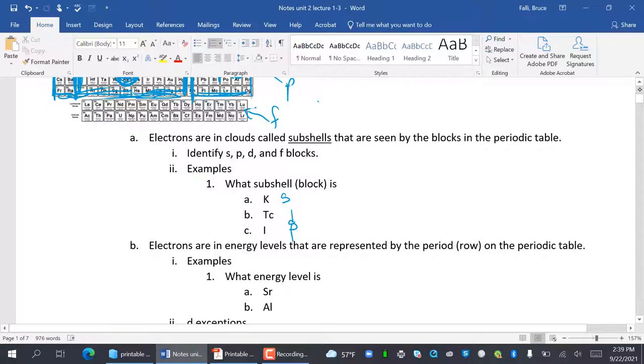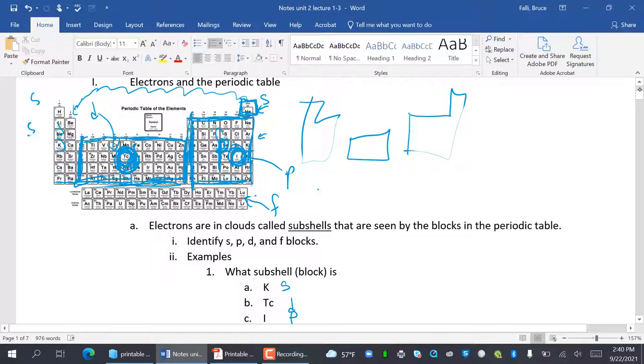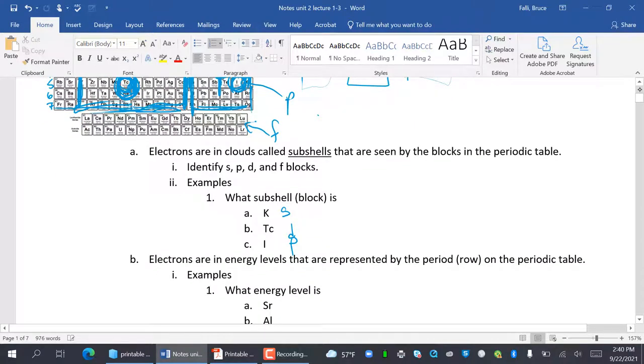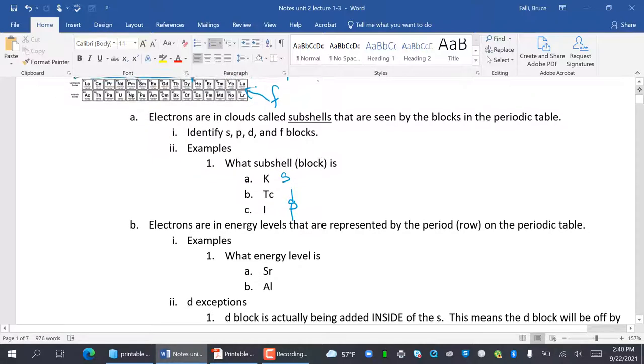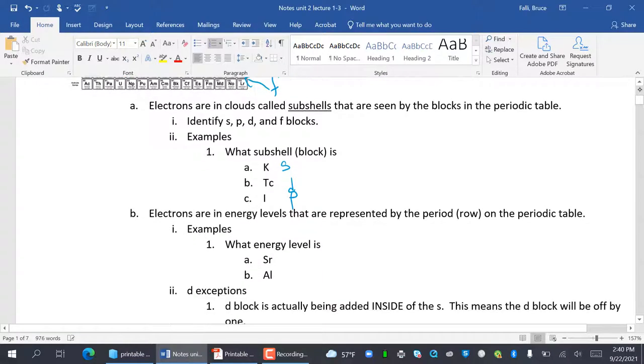Electrons are in energy levels that are represented by the period or row on the periodic table. So the period or row on the periodic table is just what row it's on. One, two, three, four, five, six, seven. What energy level is strontium and aluminum in? So strontium is right here. That's energy level five. And aluminum is right here. That's energy level one, two, three. Strontium is five. Aluminum is three.